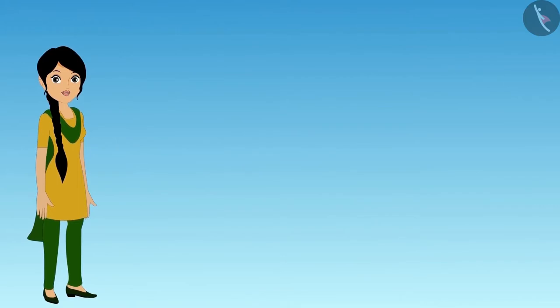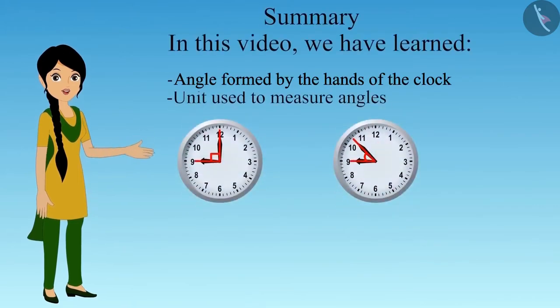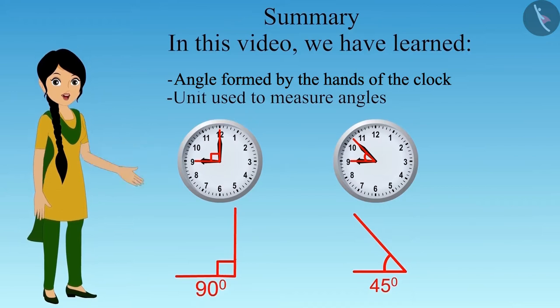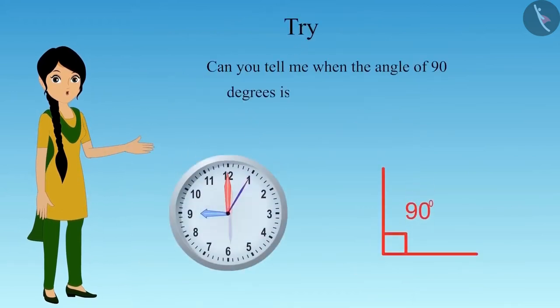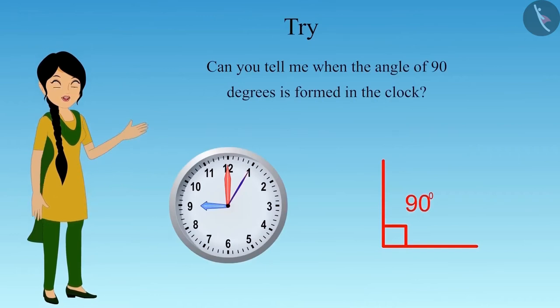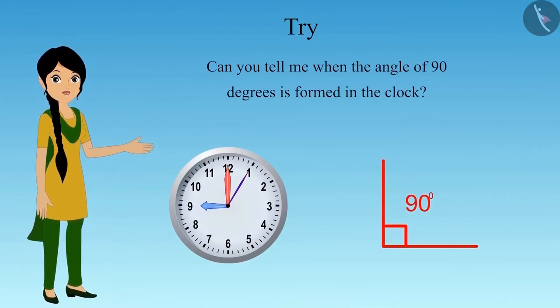In this video, we have learnt about the angles formed by the hands of the clock and the unit used to measure angles, i.e. degree. Can you tell me when the angle of ninety degrees is formed in the clock? Think for a while. We will discuss this in detail in the next video.